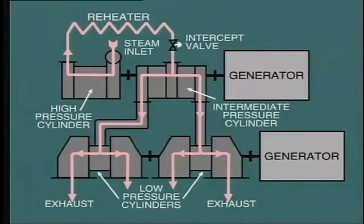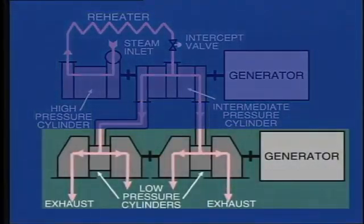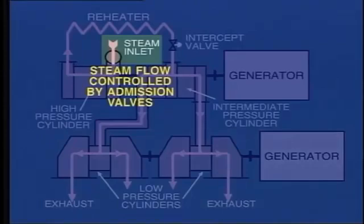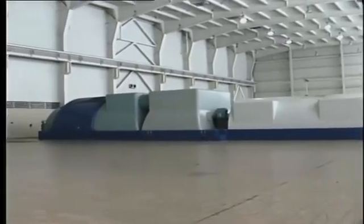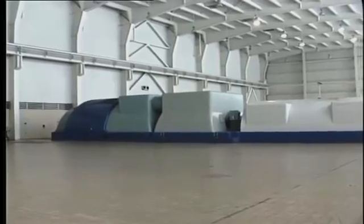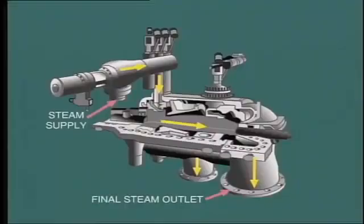Yet another cylinder arrangement used on earlier reheat machines is known as the cross-compound system. It consists of two separate turbines, each coupled to their own generator, but interlocked through a common steam system. The high-pressure and intermediate pressure cylinders drive one generator, while the two low-pressure cylinders drive the other. The steam flow through the combined turbine is controlled at the high-pressure inlet, thus controlling the output of both generators. More recent installations, particularly in industrial situations, are likely to be smaller units, probably within the range of 60 to 150 megawatts.